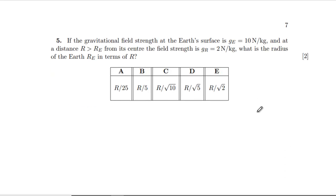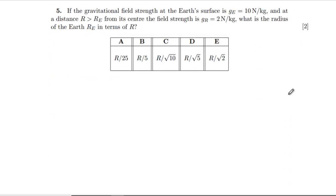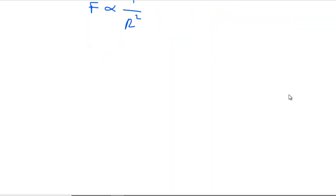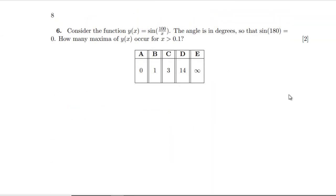Question five: if the gravitational field strength at the Earth's surface is g_e, 10 newtons per kilogram, at a distance greater R, so a further distance from the center, we've dropped off to a fifth. What is the radius R_e in terms of R? Well, the force is proportional to 1 over r squared. So if we've gone down by a factor of five, it's going to have to be root five for the radius. So that's D. These have been ridiculously easy so far.